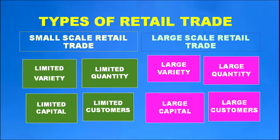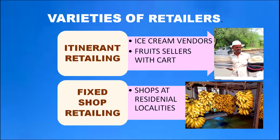In large scale retail trade, a large variety of goods is available in large quantity, but its operation requires large capital and it can attract large numbers of customers. Under small scale retail trade, we have itinerant retailing and fixed shop retailing. Ice cream sellers, fruit sellers, and cart vendors are itinerant retailers.